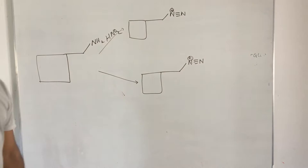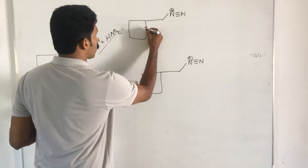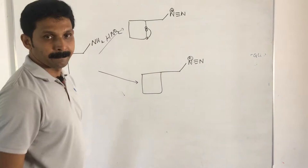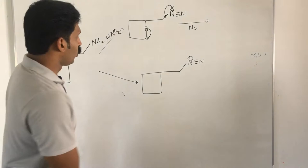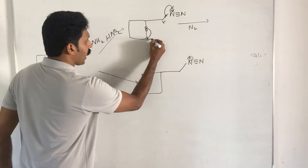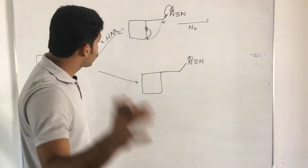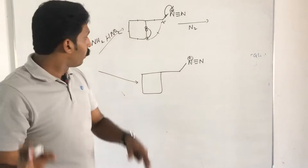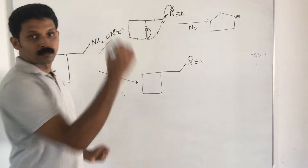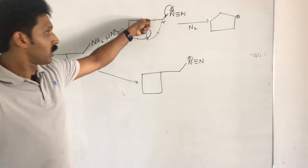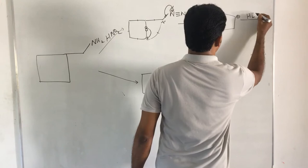In Pathway 1, two electrons jump to form a negative charge. At the same time, two electrons go toward the nitrogen, so N2 gas is released. Due to this, a positive charge is created on carbon. The negative charge attacks the ring, one bond disappears, and a five-membered ring carrying a positive charge is formed — the plus charge is on the carbocation carbon.